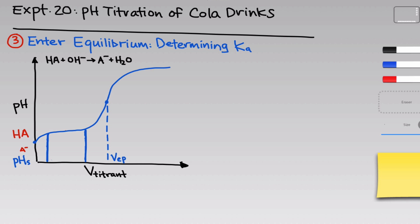We've seen solutions that behave that way before — that's called a buffer. This region of the titration curve where there's very little change in pH, even though we're adding the same number of moles of base as we're adding near the equivalence point, is known as the buffer region. The buffer region is very valuable from a chemical equilibrium perspective.